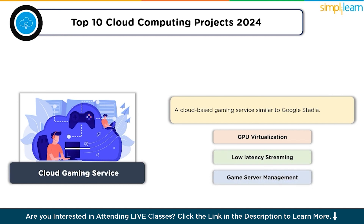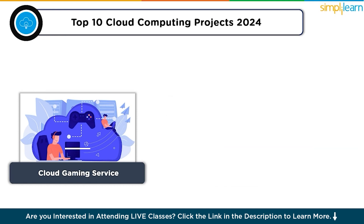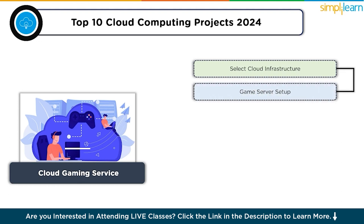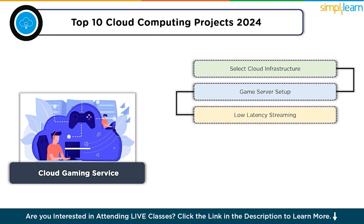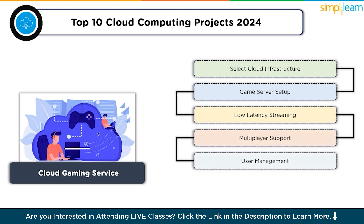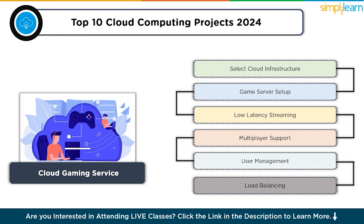Start by selecting a cloud infrastructure — either AWS or Azure — for hosting game servers. Set up game servers for hosting games, implement low latency streaming technologies for gameplay, and add multiplayer support for users to play together. Create user accounts, manage player profiles, and implement load balancing to handle increased player loads.